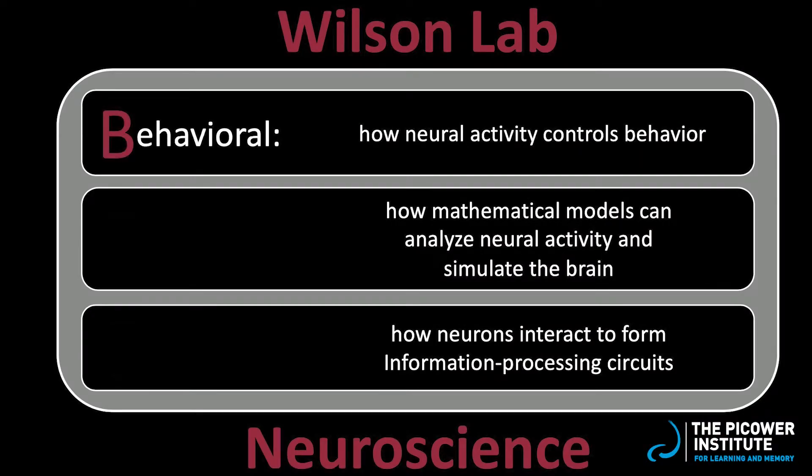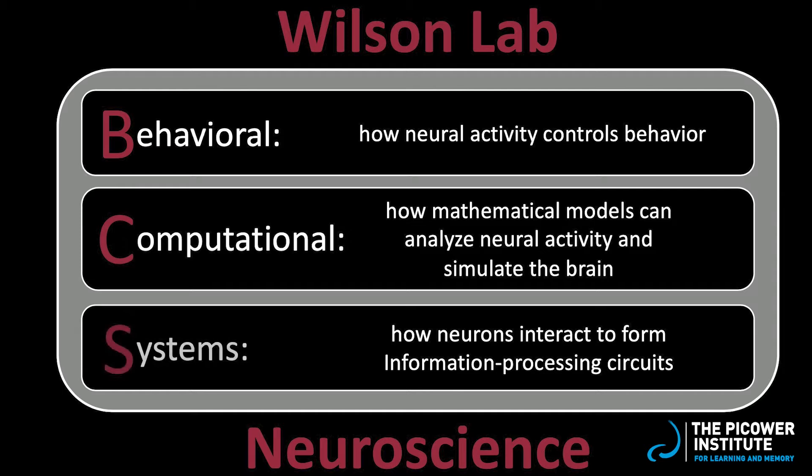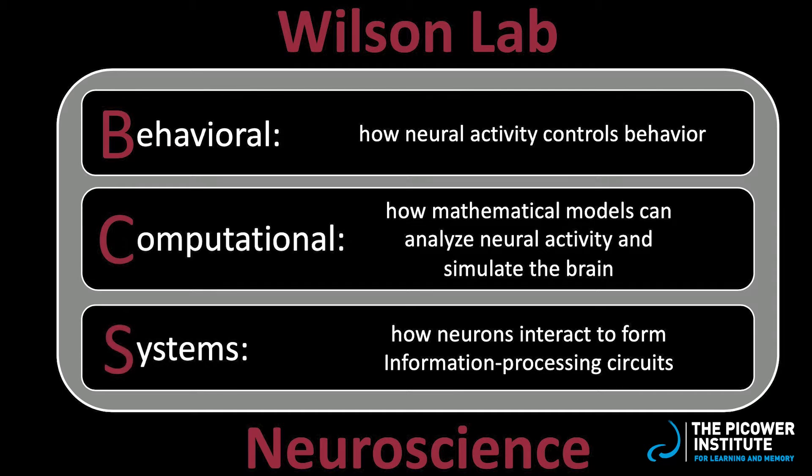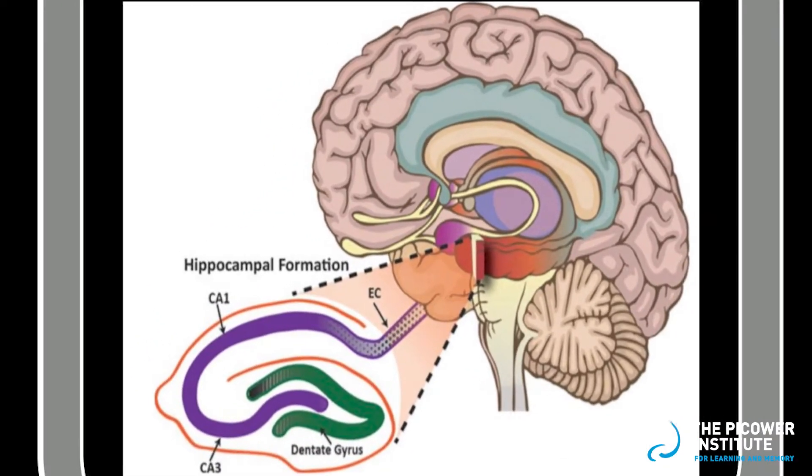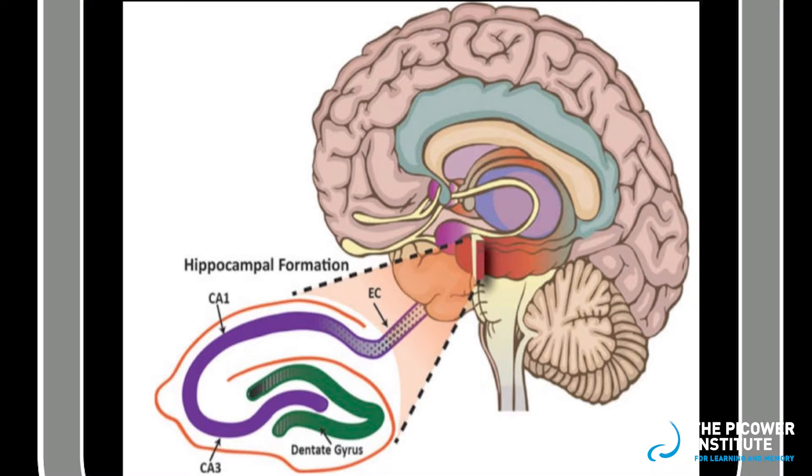The Wilson Lab is a behavioral, computational, and systems neuroscience lab focused on the role of the hippocampus in learning and memory. The hippocampus is a brain structure that helps form new memories and make them permanent. It's especially important for spatial memory.